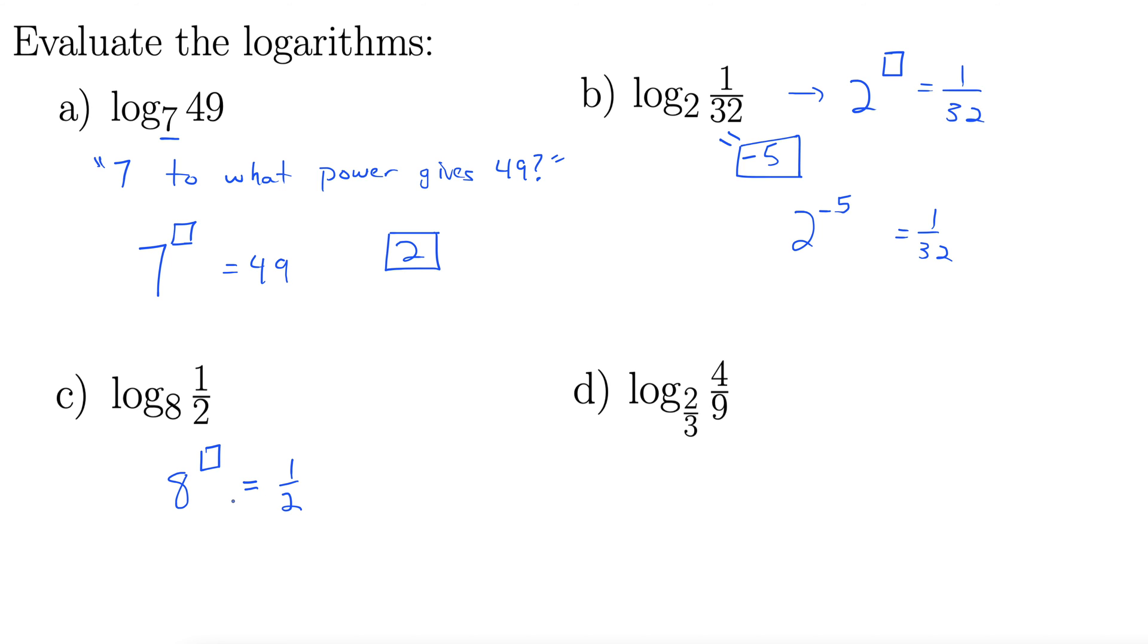Well, we just have a 1 in the numerator, so the exponent will have to be negative. 8 to the negative something gives us 1/2. How about negative 1/3? That does the trick, and here's why.